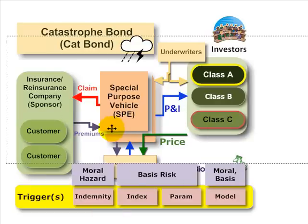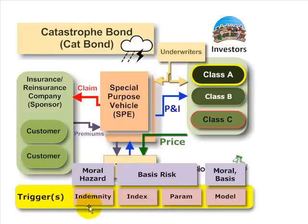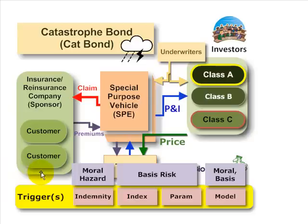Guy Carpenter recently released an excellent report on the catastrophe bond market at year-end 2007. One of their findings was a resurgence in indemnity triggers or indemnified notes, in part because there has been more supply of capital by investors wanting exposure to CAT bonds. According to the report, this has given sponsors a little more leverage to insist on indemnified triggers because they have less basis risk. This has been David Harper of Bonnet Turtle — thanks for your time.